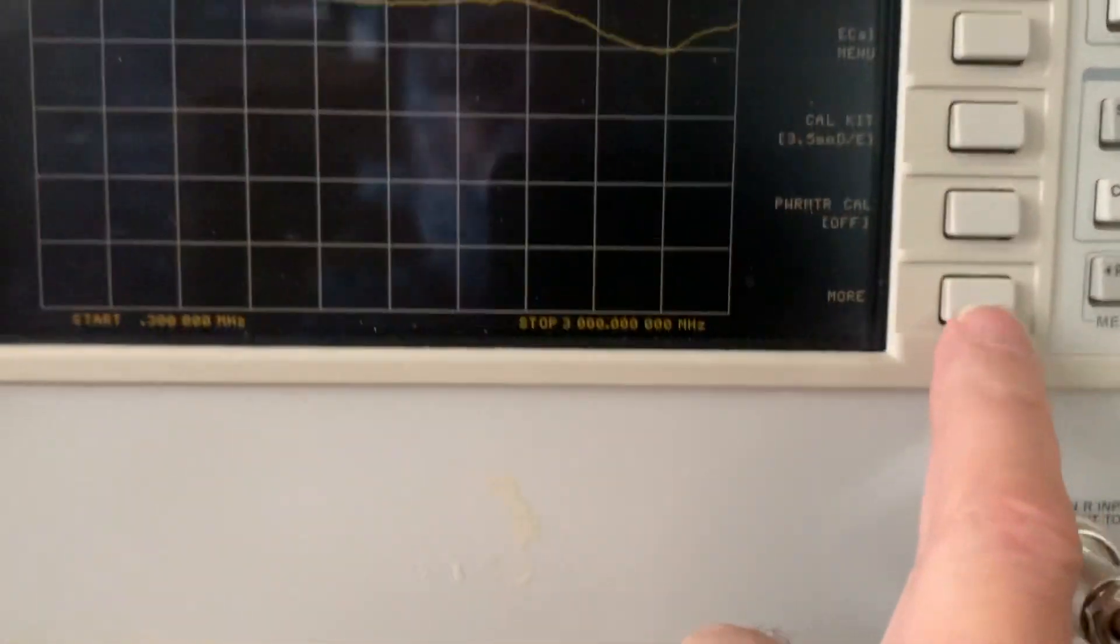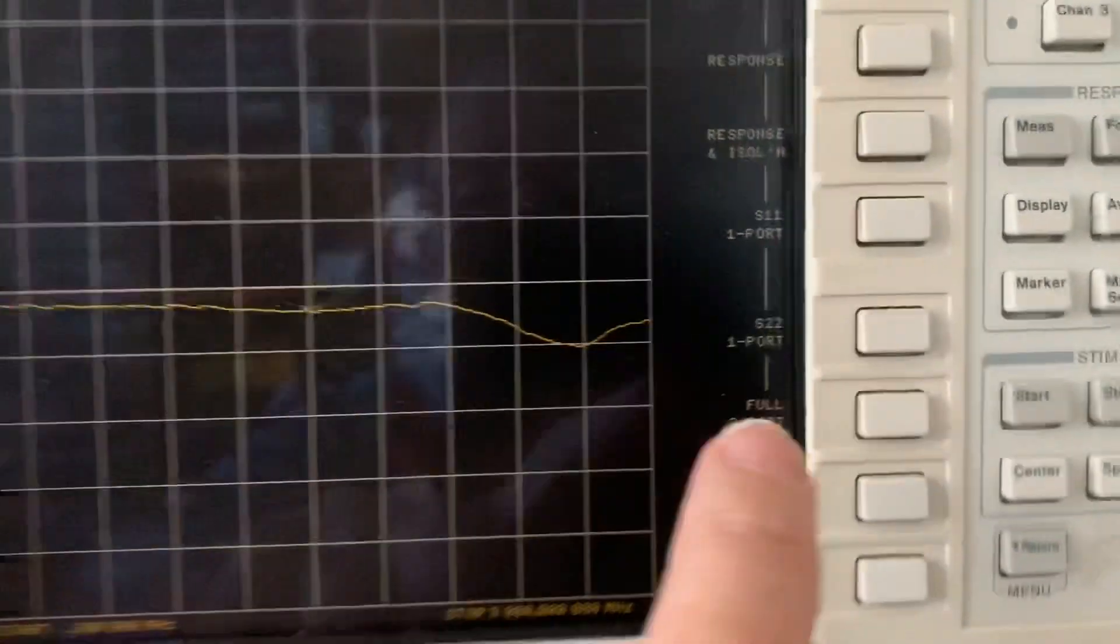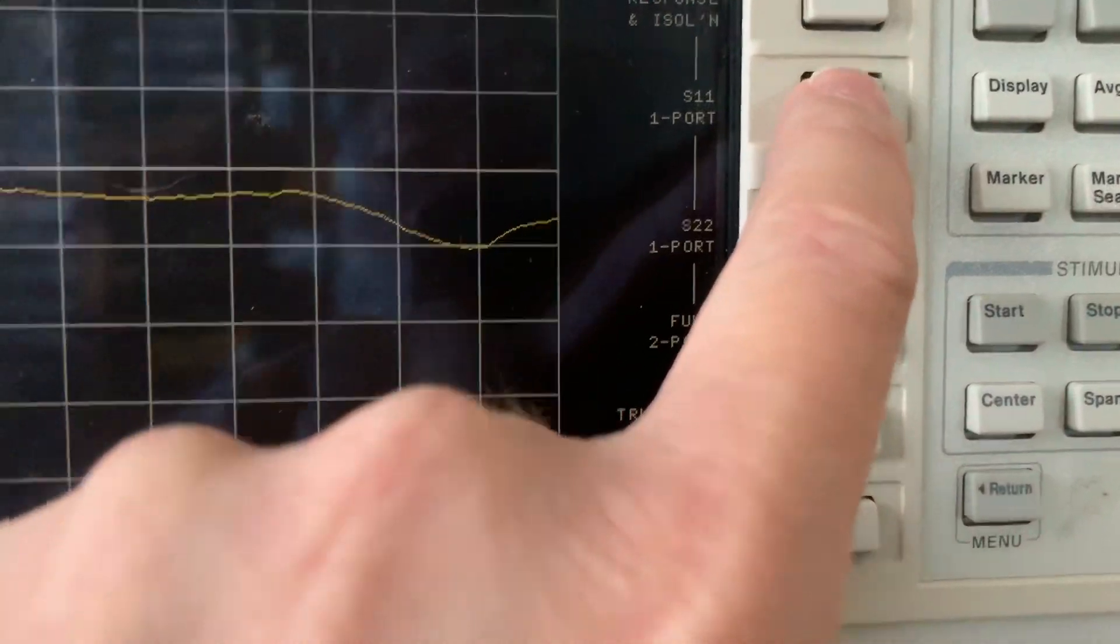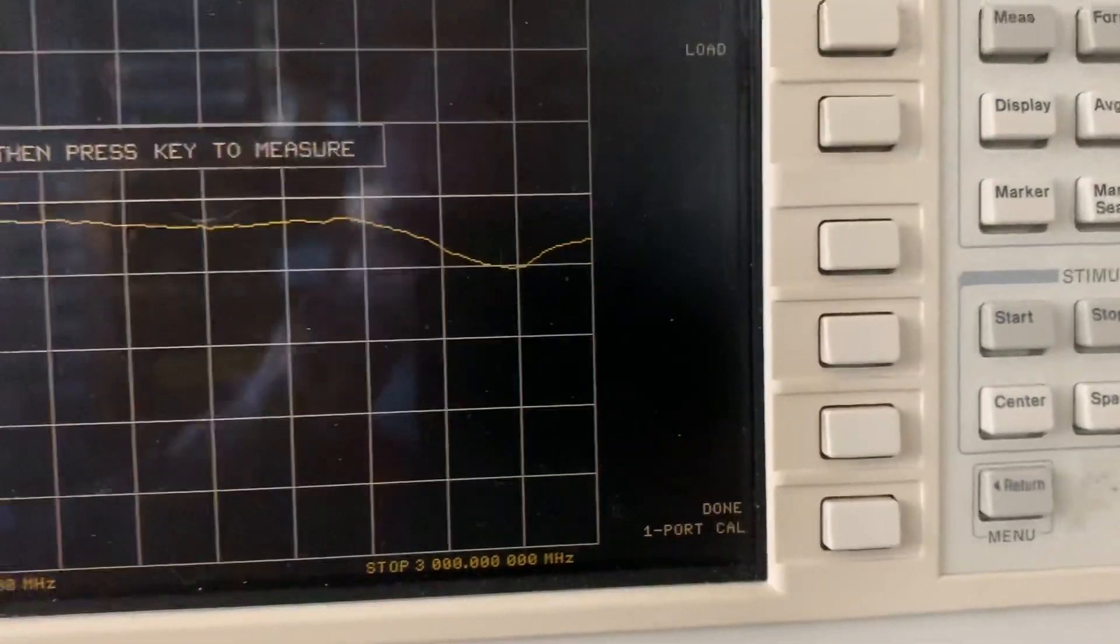Now we're going to go into the calibrate menu and we'll do a one port calibration on port one. At the top it's asking for an open. I won't put an open, I'll pick the worst possible thing.